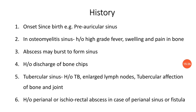The patient may give history of a bursting abscess or previous swelling which burst and resulted in sinus formation. Sometimes the patient may give history of discharge of bone chips from the sinus opening. In tubercular sinus, there will be history of TB in large lymph nodes or tubercular affection of bone or joint. In perianal sinus, the patient will give history of perianal or anorectal abscess.